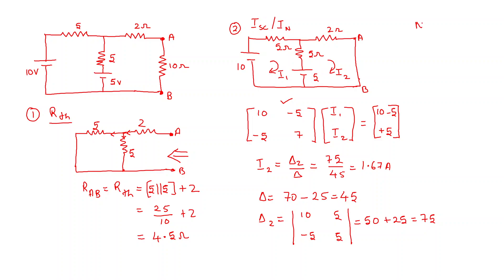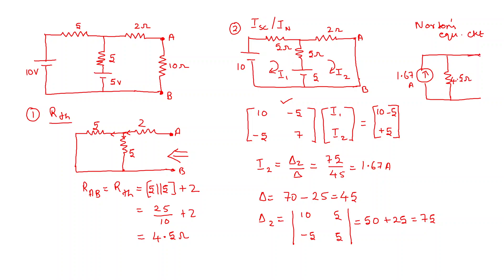Now we can draw the Norton's equivalent circuit. First, take the short circuit current ISC — how much is it? ISC is the current through AB, which is 1.67 amps. This is in parallel with RTH, which is 4.5 ohms, and across AB we connect the load, which is 10 ohms. So this is the Norton's equivalent: 1.67 amps is the Norton's current, equal to IN or ISC.